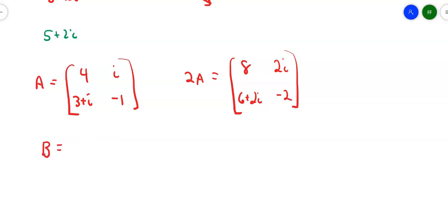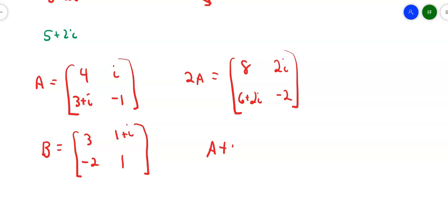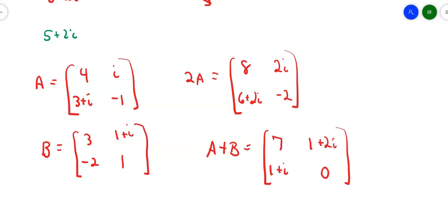Suppose I have matrix B: 3, 1 plus i, negative 2, and 1. If I want to add A plus B, I still add term by term. So 4 plus 3 is 7 in row 1, column 1. i and 1 plus i gives 1 plus 2i in row 1, column 2. Then 3 plus i and negative 2 gives me 1 plus i, and negative 1 plus 1 gives me 0. So I can take the sum of those two matrices.